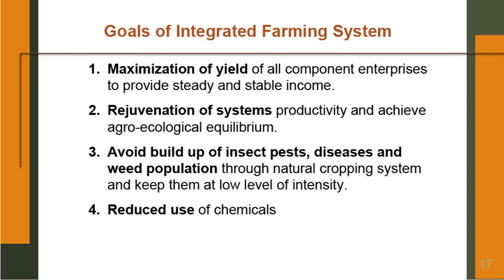Goals of integrated farming system: there are four major goals — first, maximization of yield of all component enterprises to provide steady and stable income. Second, rejuvenation of system's productivity and achieve agro-ecological equilibrium. Third, to avoid build-up of insect pests, diseases and weed population through natural cropping systems and keep them at a low level of intensity. Here the role of crop rotations becomes very indispensable. Through crop rotations, one can manage nutrients as well as insect pests and diseases in the system — this will help in reduction of chemical use in farming.